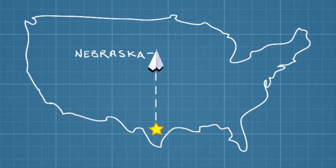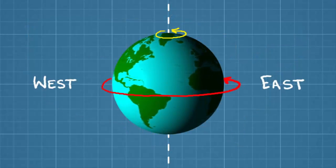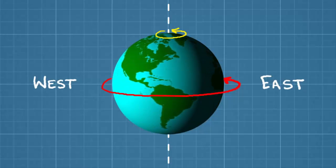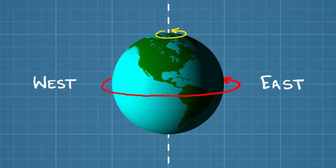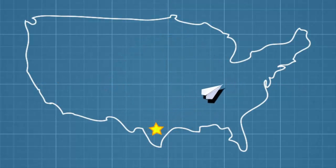But Texas is actually spinning around Earth's axis faster than Nebraska is because it's closer to the equator. That means that the paper airplane is spinning faster as well. And when you throw it, that spinning momentum is conserved. So if you threw your paper airplane in a straight line toward the north, it would land somewhere to the right of Nebraska, maybe in Delaware.